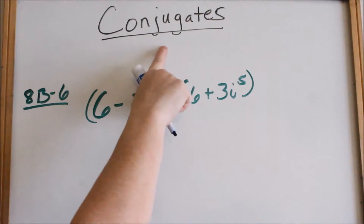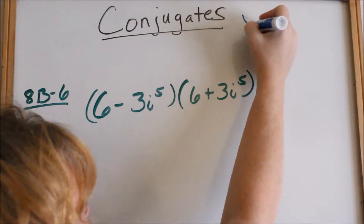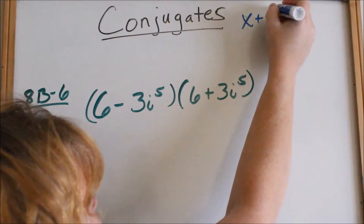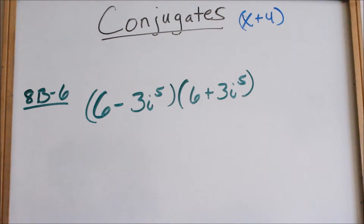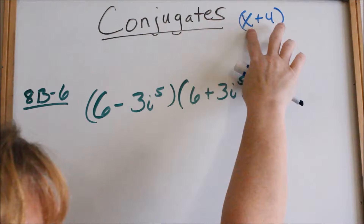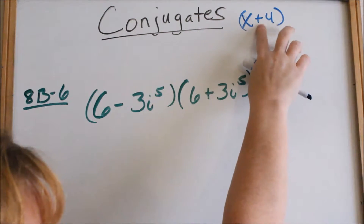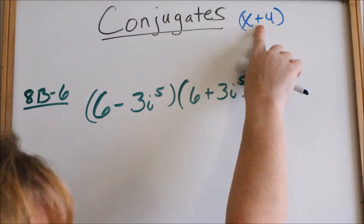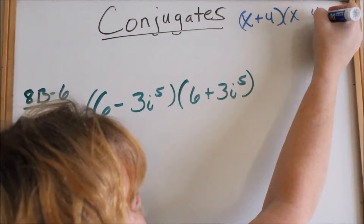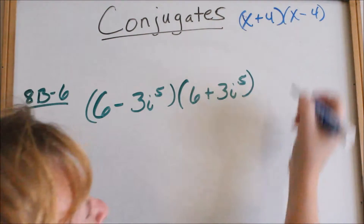Today we are doing conjugates. What is that? If you had x plus 4, the conjugate of that looks exactly the same in the parentheses, except the sign is different. So we're going to have x and 4, but instead of a plus sign, we'll have a minus sign.